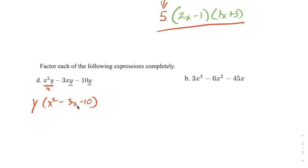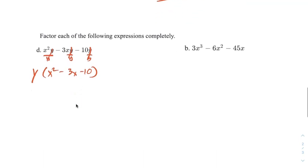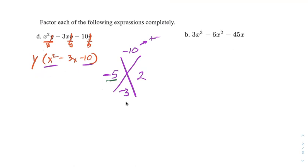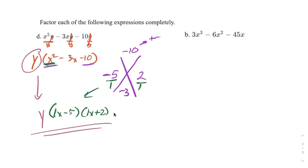Remember if you're not sure how I get that, just divide each term by the thing you pulled out — in each case the y's cancel. Now we still have to factor x squared minus 3x minus 10, so let's do big X. A times C is negative 10, middle is negative 3. Since it's negative, different signs — looks like negative 5 and 2. The bigger number matches the sign of the bottom. Dividing by A, which is 1, we get x minus 5 and x plus 2. And don't forget the y we pulled out at the very beginning.